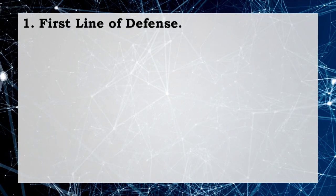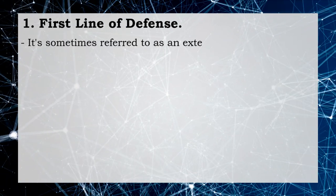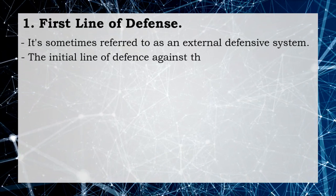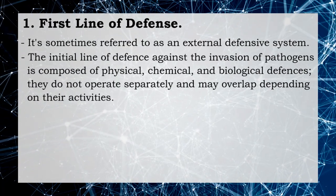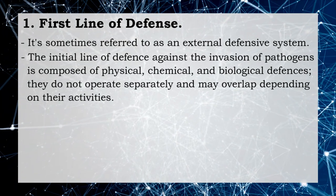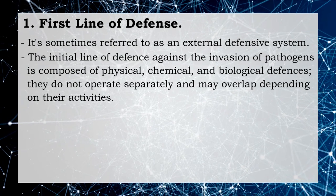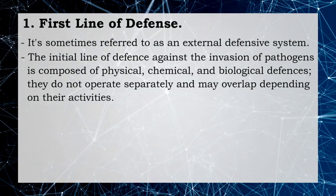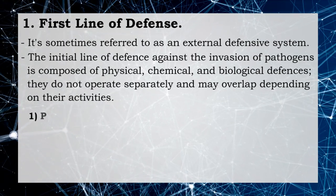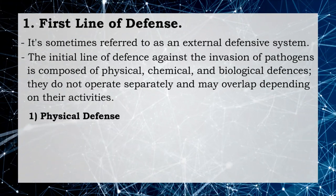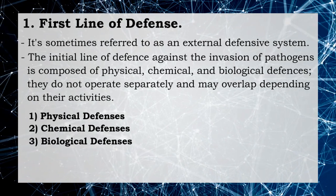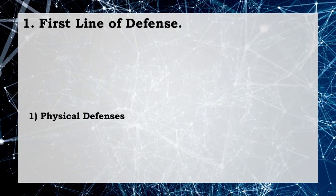The first line of defense is sometimes referred to as an external defensive system. The initial line of defense against invasion of pathogens is composed of physical, chemical, and biological defenses. They do not operate separately and may overlap depending on activities. These include: number one, physical defenses; number two, chemical defenses; number three, biological defenses.